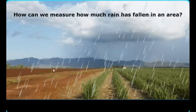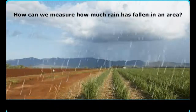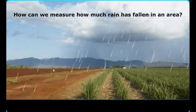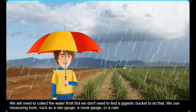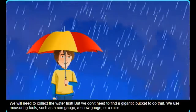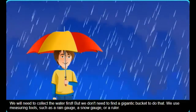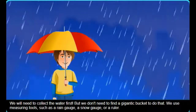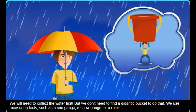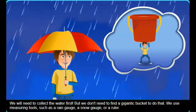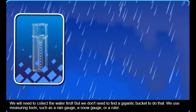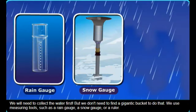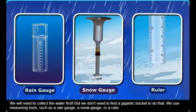How can we measure how much rain has fallen in an area? We will need to collect the water first. We don't need to find a gigantic bucket to do that. We use measuring tools, such as a rain gauge, a snow gauge, or a ruler.